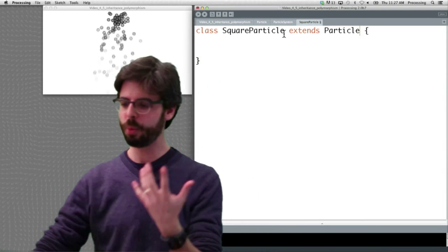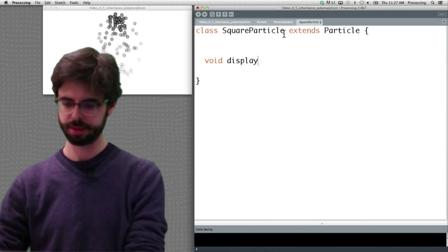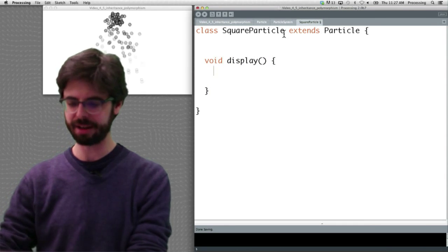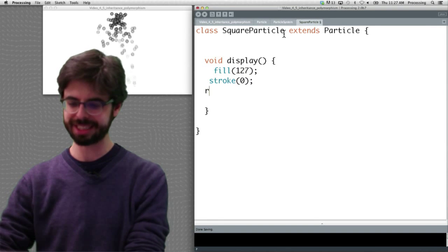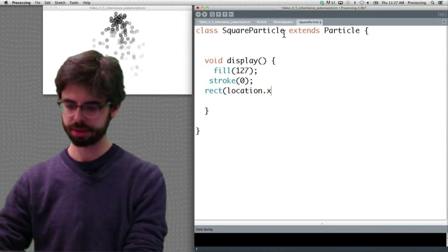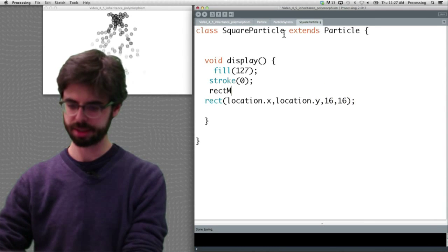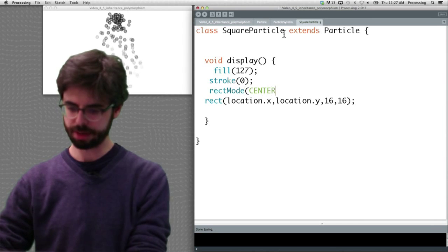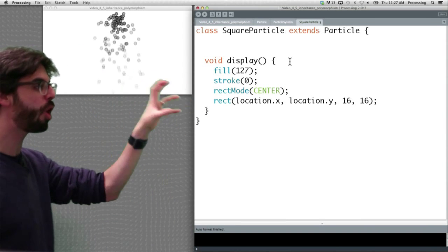But we want to change one thing. We just want to override the display method. Instead of, I'm going to just add some stroke and fill, instead of a circle, and it's with some size, and we'll say rect mode center. We're just adding in a bunch of stuff to draw it as a rectangle.